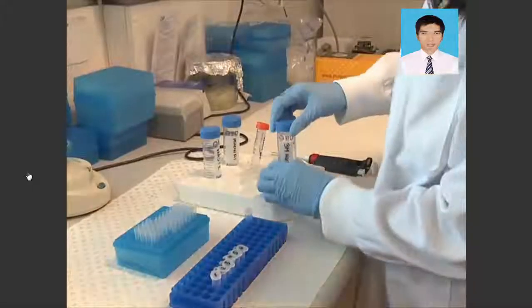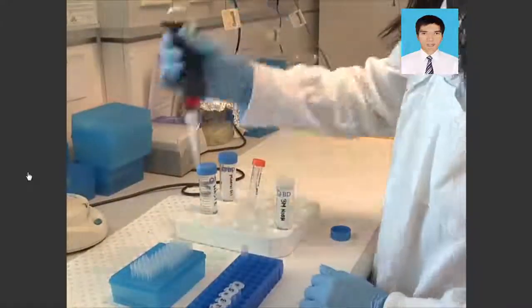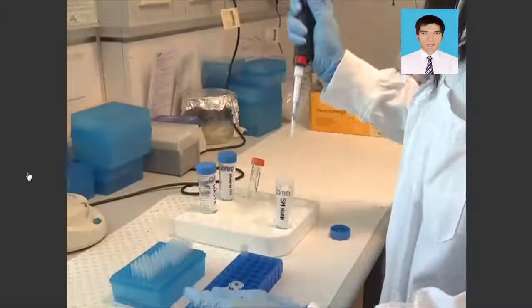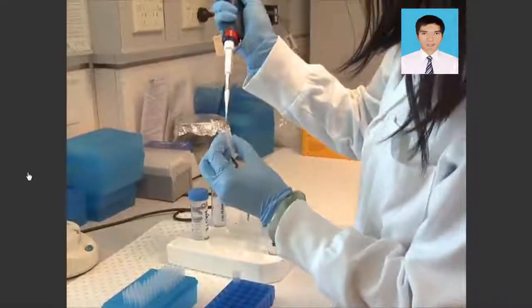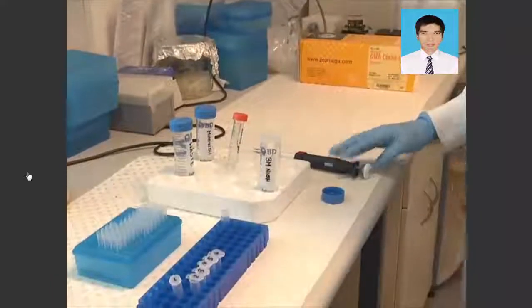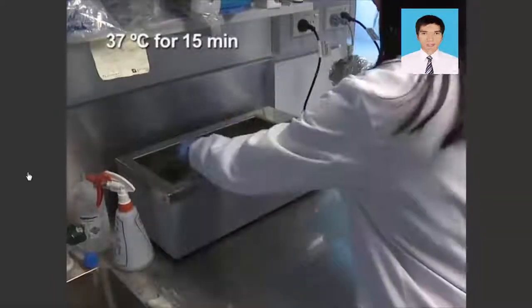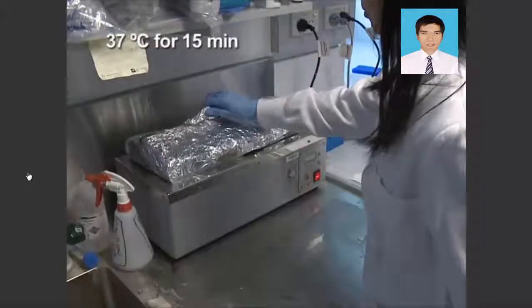The next step is to remove the bisulfite adduct from the uracil ring by desulfonation. To accomplish this, add 5.5 microliters of freshly prepared 3 molar sodium hydroxide to each bisulfite-treated DNA sample for a final concentration of 0.3 molar. Then incubate the samples at 37 degrees Celsius for 15 minutes.